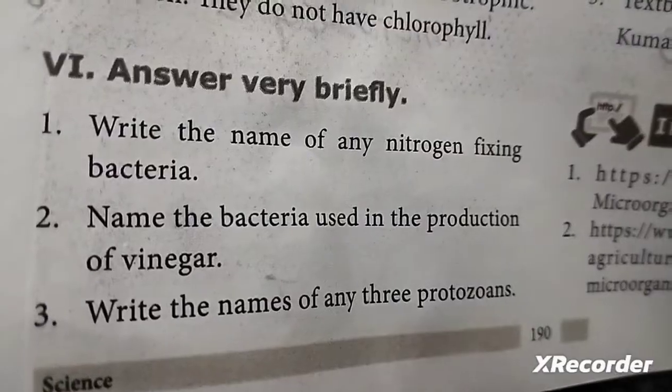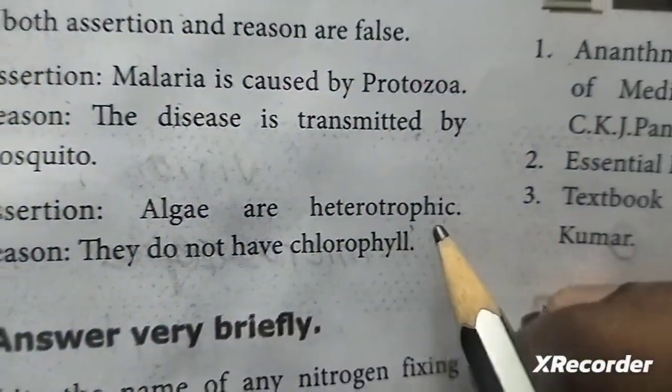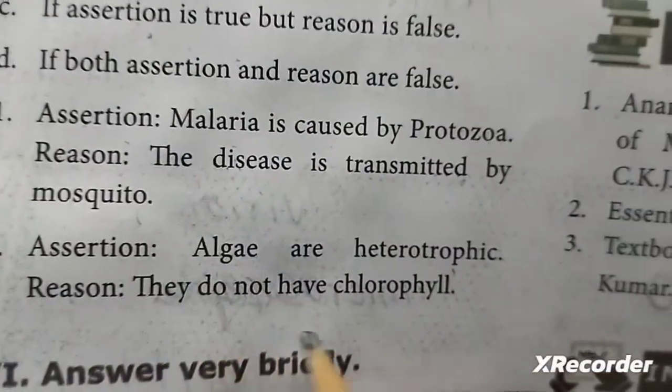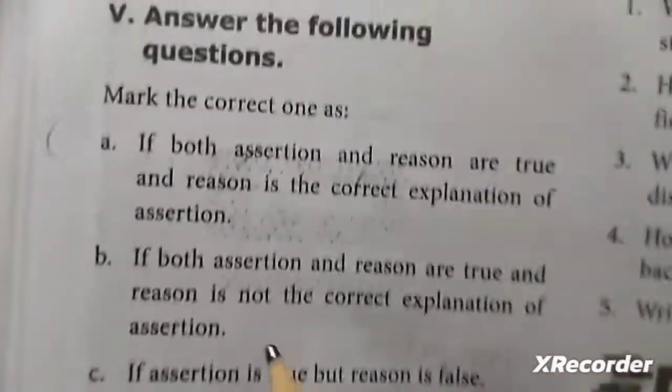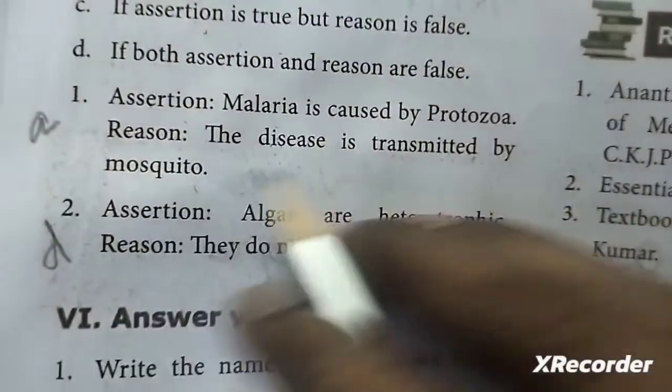Second one - assertion: algae are heterotrophic. Reason: they do not have chlorophyll. Here the answer is D: if both assertion and reason are false.